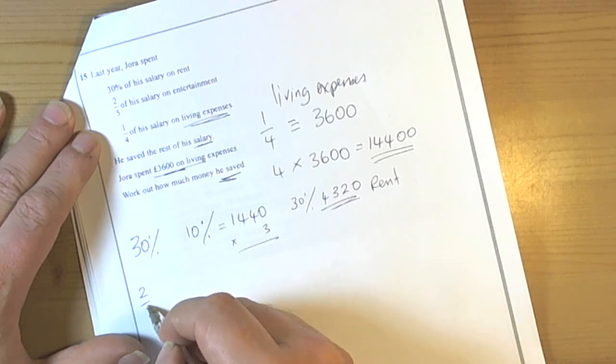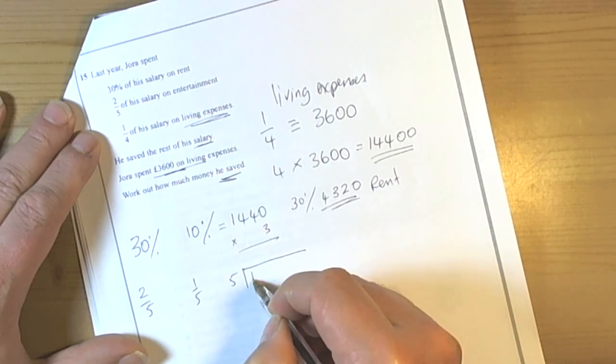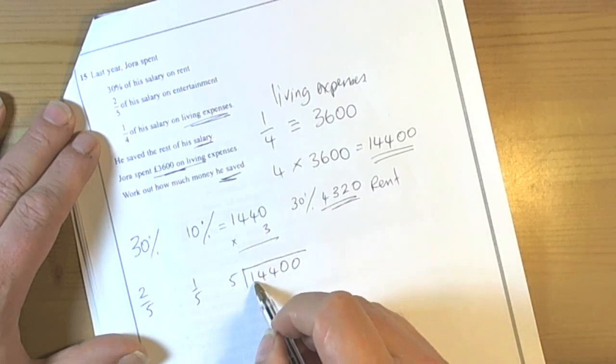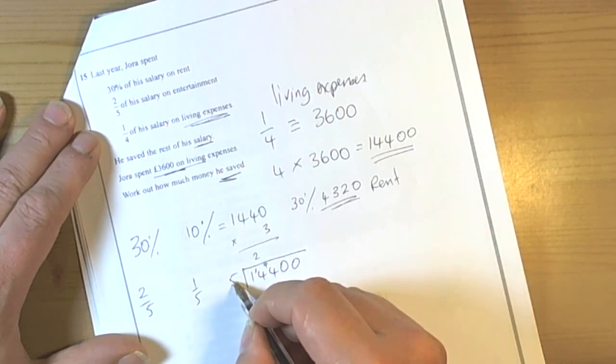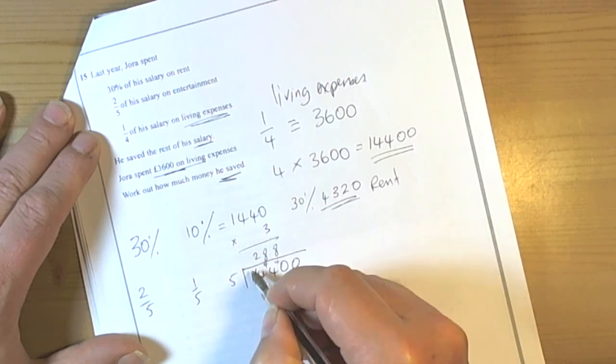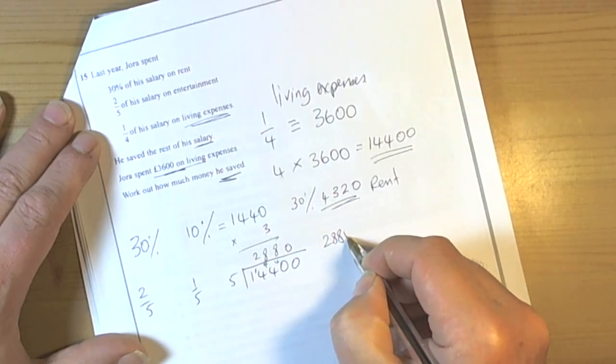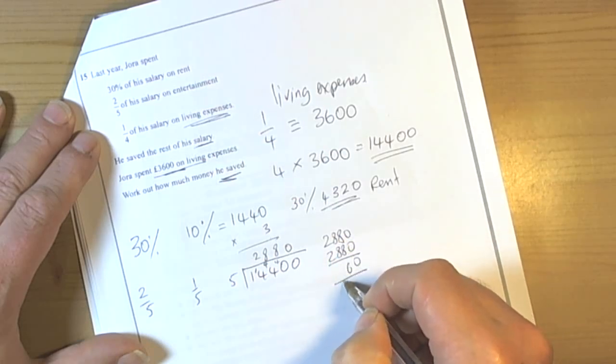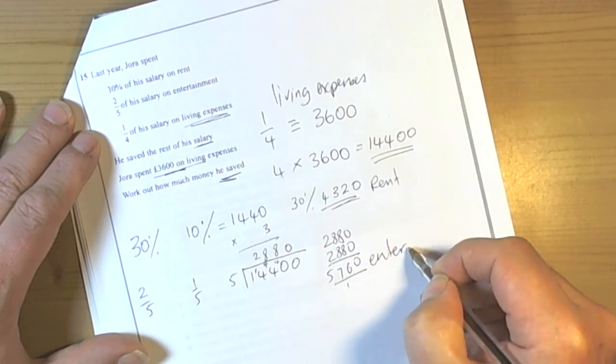It's saying 2 fifths is on entertainment, so 1 fifth we can find by doing how many fives going to 14,400. So fives into 1 doesn't go, carry the 1. Fives into 14, twice, carry the 4 over. Fives into 44 is 8, 4 over. Fives into 48 is 8, fives into 40 with no carry over. Fives into nothing, not. So 1 fifth is that, so 2 fifths would be twice that. So 0, 6 and 1, 16 add the 1 to 17, so £5,760 on entertainment.